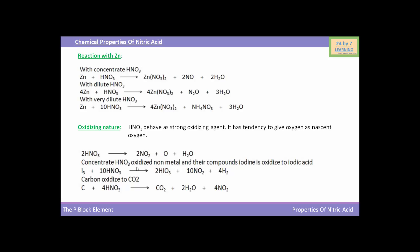Concentrated HNO3 oxidizes non-metals and their compounds. Iodine is oxidized to iodic acid: I2 reacts with HNO3 to yield HIO3 (iodic acid), with NO2 and H2O as byproducts. When HNO3 reacts with carbon, carbon is oxidized to CO2 gas. The reaction shows carbon reacting with HNO3 to yield CO2 gas, water, and NO2. These are the chemical properties of nitric acid.